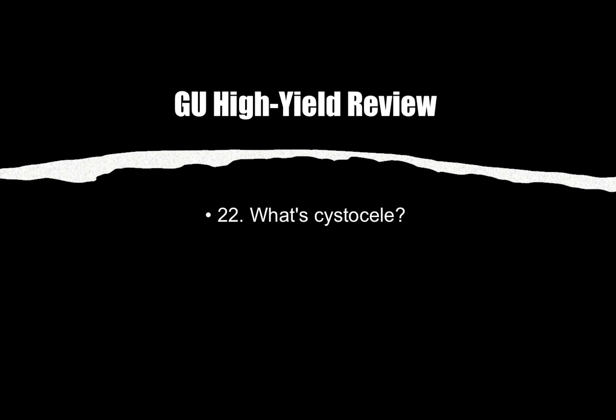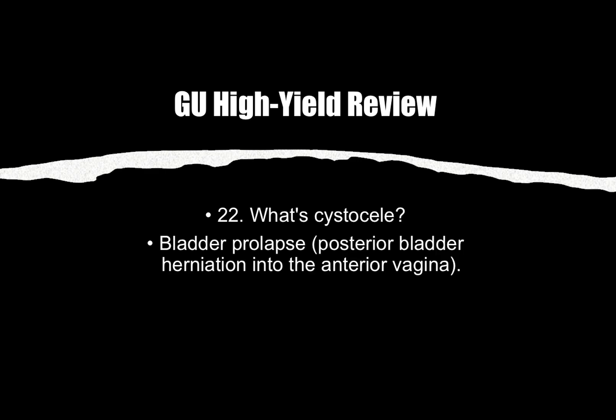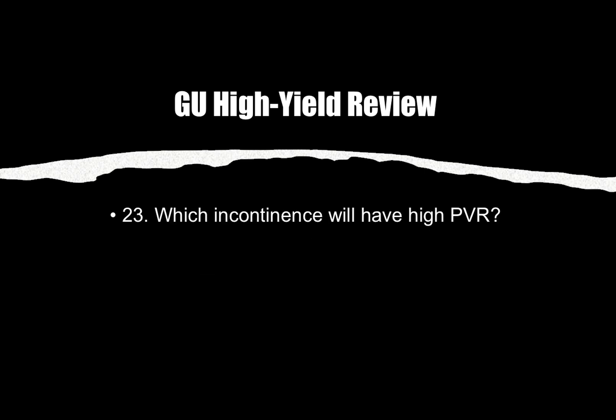Number twenty-two: What is a cystocele? Cystocele is a bladder prolapse — posterior bladder herniation into the anterior vagina. They can also ask which part of the vagina the prolapse herniates into; the answer is anterior vagina. Number twenty-three: Which incontinence will have a high PVR? High PVR is associated with overflow incontinence.